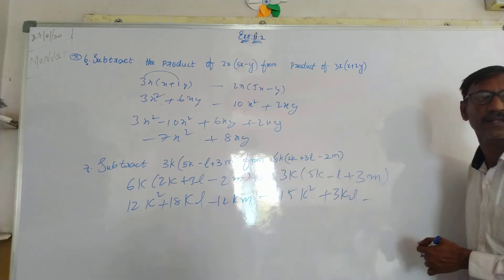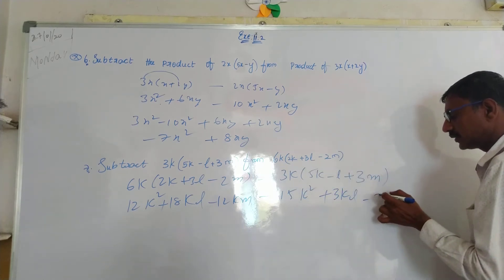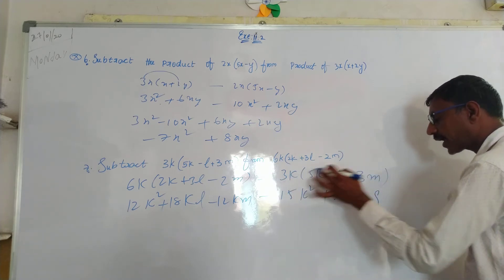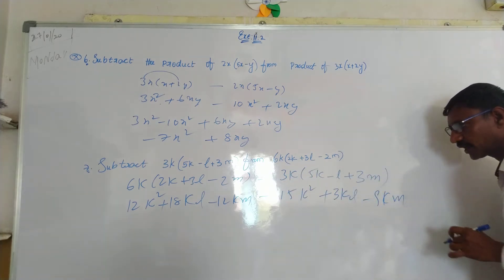By 2 through minus. Multiply, 3 times 3 is 9. 3 times 3 is 9, K into M is KM, like this one.